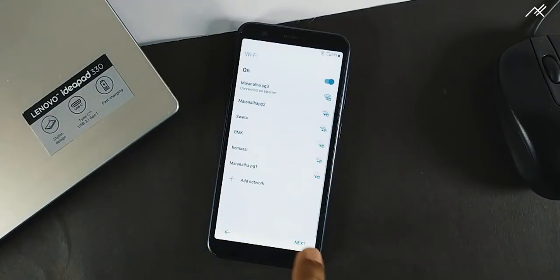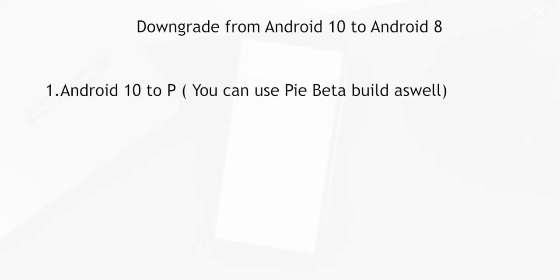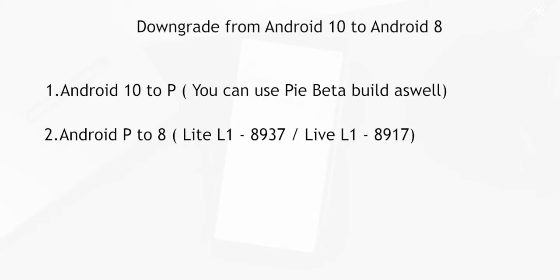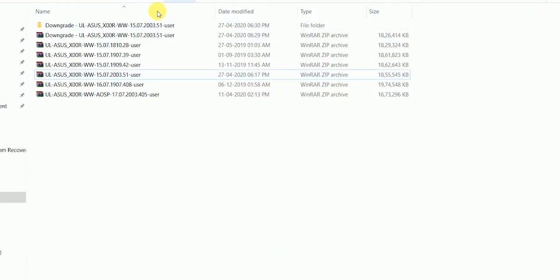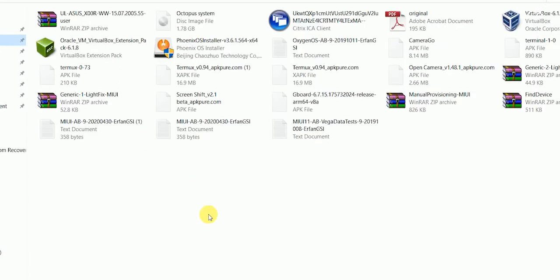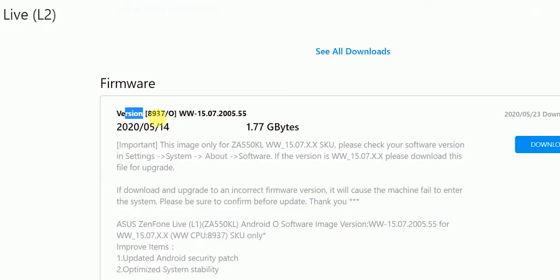From this long experience, what I can say is you have to download 3 builds in order to downgrade: the 10-to-9 build (if you don't have Pi Beta already), the 9-to-8 downgrade, and then the latest Android Oreo build — install all three to resolve the restart issue. As mentioned, if you have the Lite L1, download the 8937 build. If you have the Live L1, download the 8917 build.